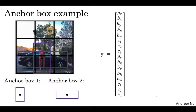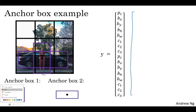So, let's go through a concrete example. For this grid cell, let's specify what is Y. So, the pedestrian is more similar to the shape of anchor box one. So, for the pedestrian, we're going to assign it to the top half of this vector. So, yes, there is an object, there'll be some bounding box associated to the pedestrian, and I guess if a pedestrian is class one, then it'll be C1 is one, and then zero, zero.